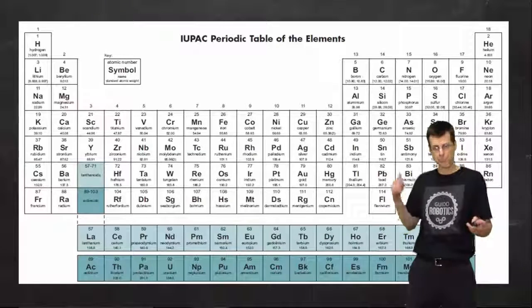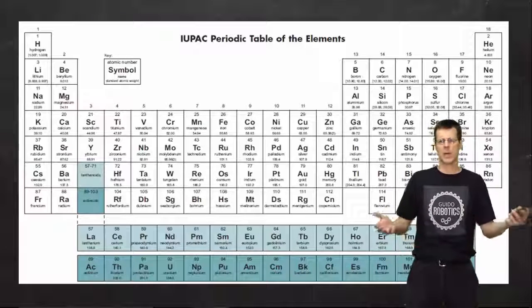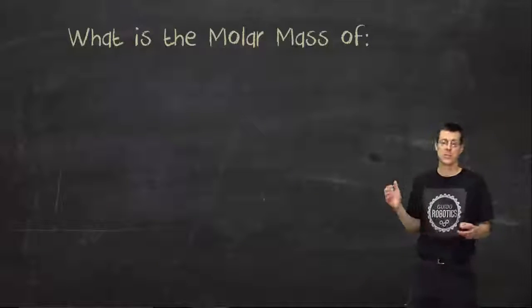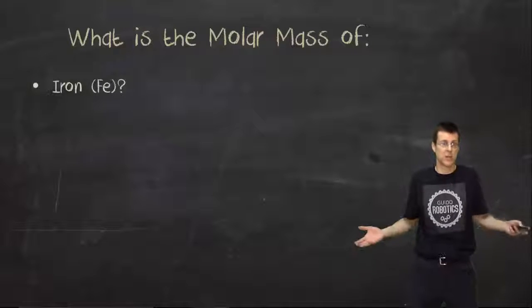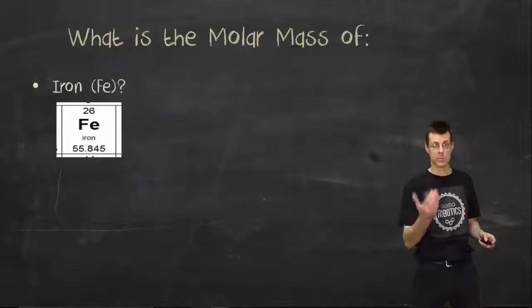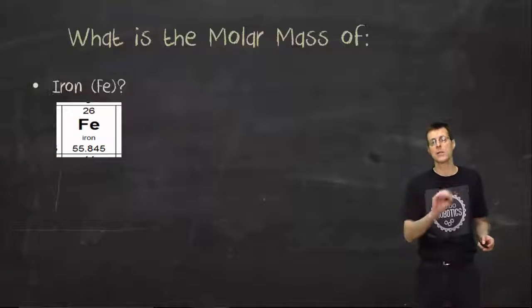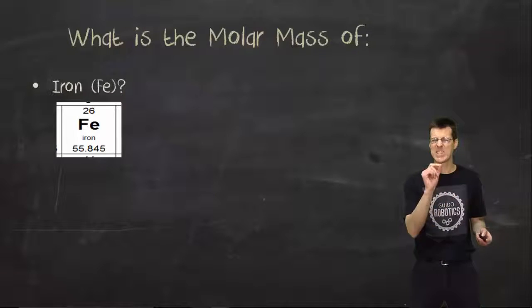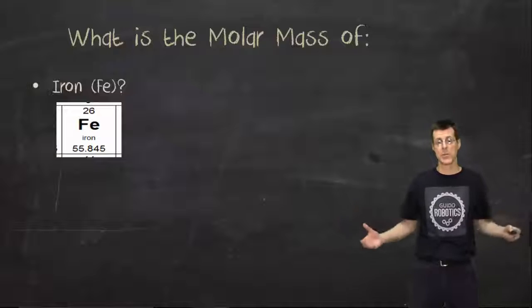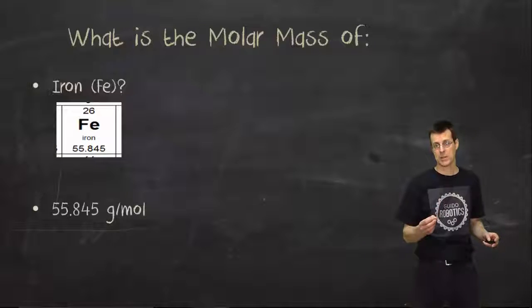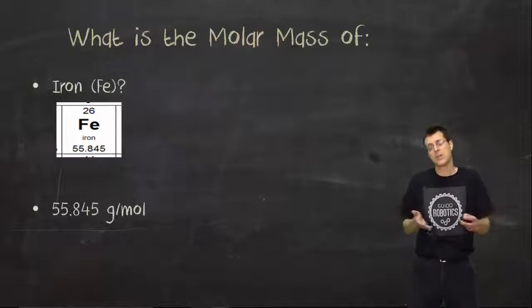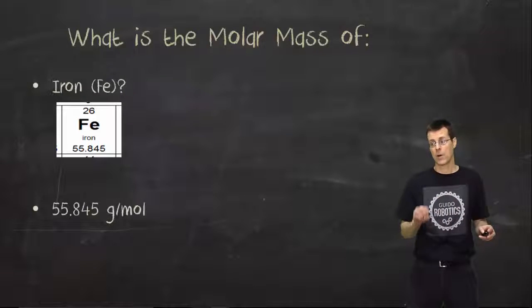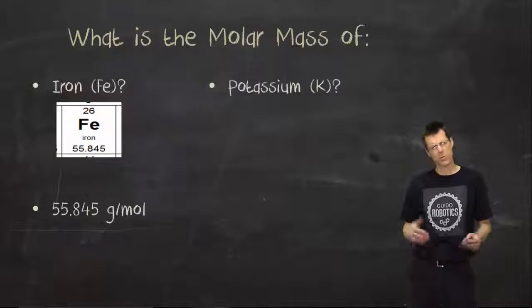We need the periodic table. If you have the molar mass of iron, you go to the periodic table, you find iron, and you'll look at the mass number. Now, we've used that mass number before when it was talking about the mass of a single atom. Now, we're going to be talking about the mass of 6.022 times 10 to 23 atoms. And fortunately, the number stays the same. It's 55.845, but now it's grams per mole.